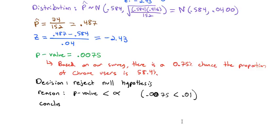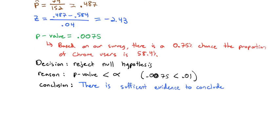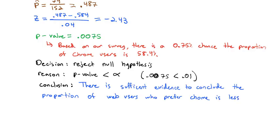So our conclusion: since we reject the null hypothesis, we will say 'there is sufficient evidence to conclude,' and then state the alternative hypothesis in context, focusing on being less than 0.584. To conclude: the proportion of web users who prefer Chrome is less than 58.4%.